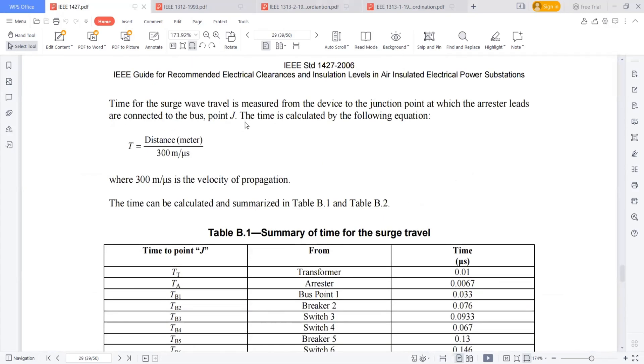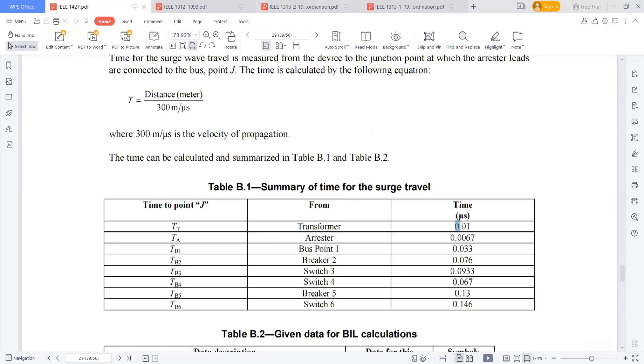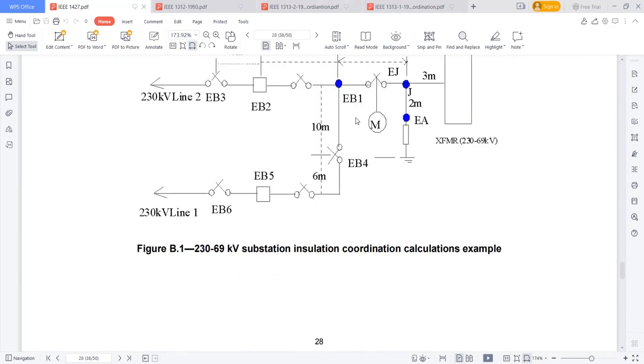I am calculating if suppose a surge occurred, then what time it will take to reach the junction point. So obviously it's distance divided by velocity. What is the speed? 300 meter per microsecond, velocity of propagation. So what is the distance divided by this? Suppose if I'm talking about the transformer, it's 3 meters. So 3 by 300, which gives me 0.01 microsecond. So like that, I have calculated that time. Suppose a surge occurred here, how much time it will take to reach the isolator, to reach the lightning arrestor to suppress this surge.